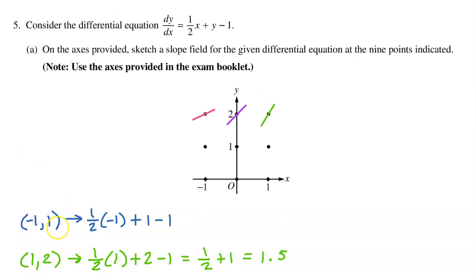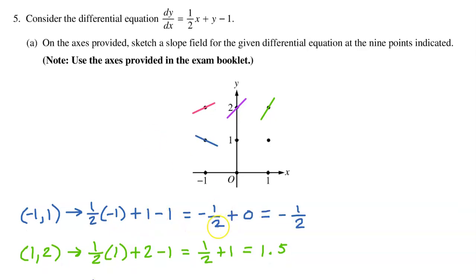At the point (-1, 1), we have one-half times negative 1 plus 1 minus 1. This is negative one-half plus zero, which equals negative one-half. So draw a decreasing slope, but not as steep as a 45-degree angle.